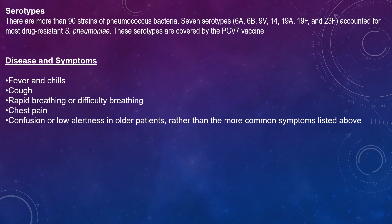Of more than 90 strains of pneumococcal bacteria, seven serotypes — 6A, 6B, 9V, 14, 19A, 19F, and 23F — are known to account for the most drug-resistant Streptococcus pneumoniae. These serotypes are covered by the PCV7 vaccine.